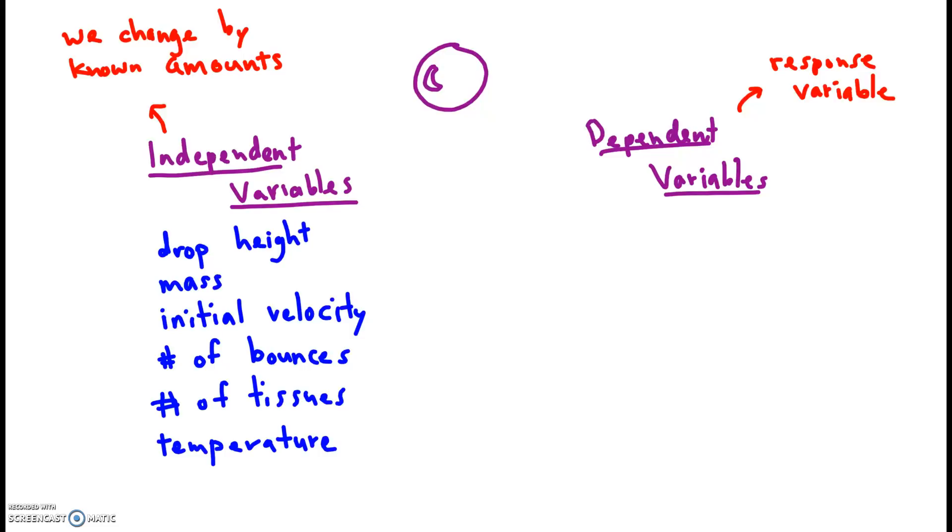And what are some dependent variables? What are things that might change about the ball based on these types of factors? Well, you could measure the time to fall or the time to bounce, time to fall, time to rebound. We could also measure, perhaps, the rebound height. How high does it go?